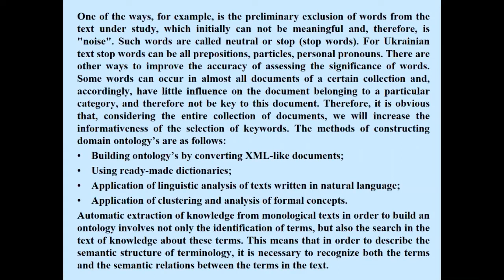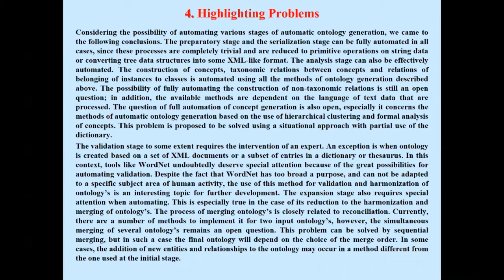The methods of constructing domain ontology are as follows: building ontology by converting XML-like documents, using corrective machine dictionaries, application of linguistics, analysis of terms written in natural language, application of clustering, and analysis of formal concepts. Considering the possibility of automating various stages of automatic ontology generation, we came to the following conclusion: the preparatory stage and serialization stage can be fully automated in all cases, as the processes are reduced to primitive operations on string data for converting tree data structures into XML-like format. The validation stage to some extent requires the intervention of an expert, except when ontology is created based on XML documents or dictionary entries. Tools like WordNet deserve special attention because of the great possibilities for automating validation.